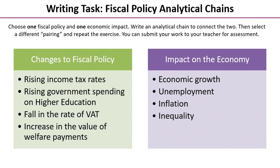Here is the written task to finish off this online lesson — we're going to be practicing analytical chains in relation to fiscal policy. In the box on the left I've suggested four possible fiscal policy actions; in the right-hand box I've outlined four possible impacts on the economy. Choose one item from each box — mix and match as you like — and write an analytical chain to connect those two. You can use the corporation tax example as a guide. Choose different pairings and repeat as many times as you like, then submit your work to your teacher for assessment.